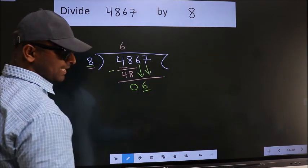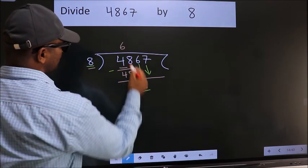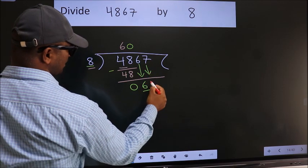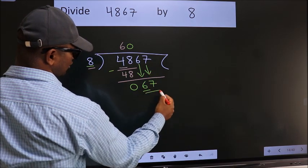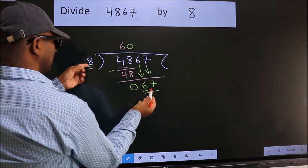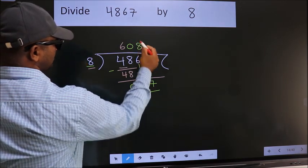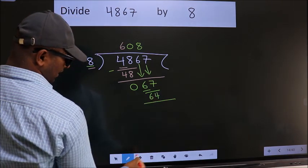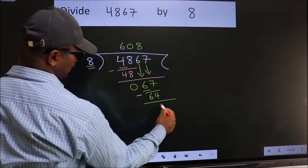And the rule to bring down the second number is put 0 here. Then only we can bring down this number. So, 67. A number close to 67 in the 8 table is 8 times 8, 64. Now we subtract. We get 3.